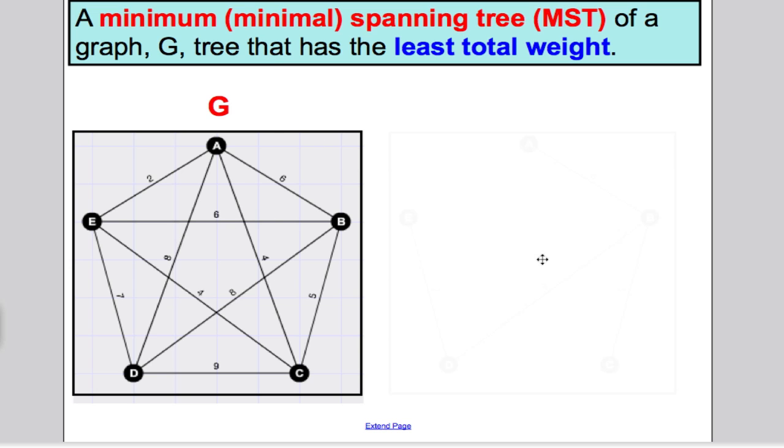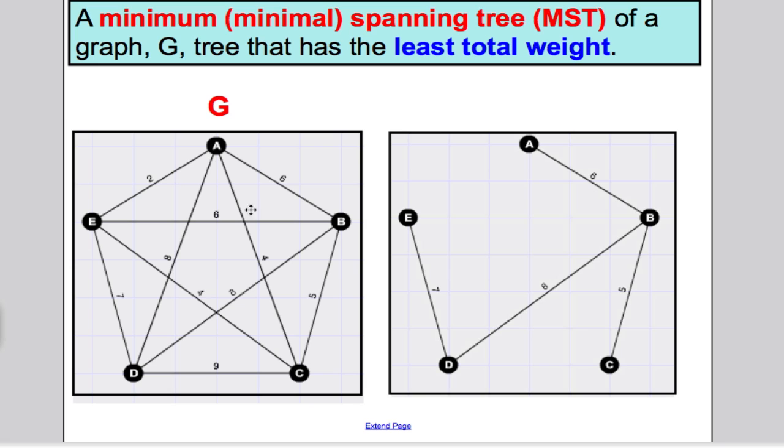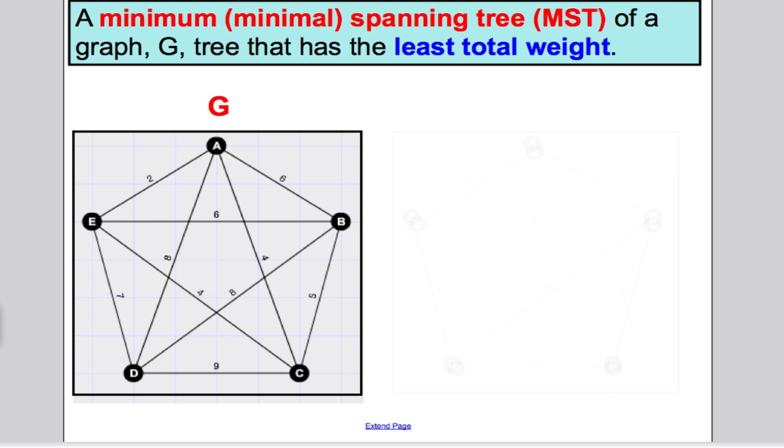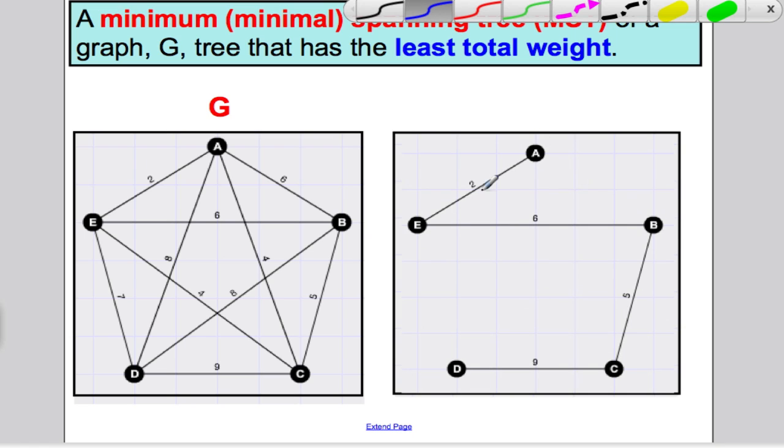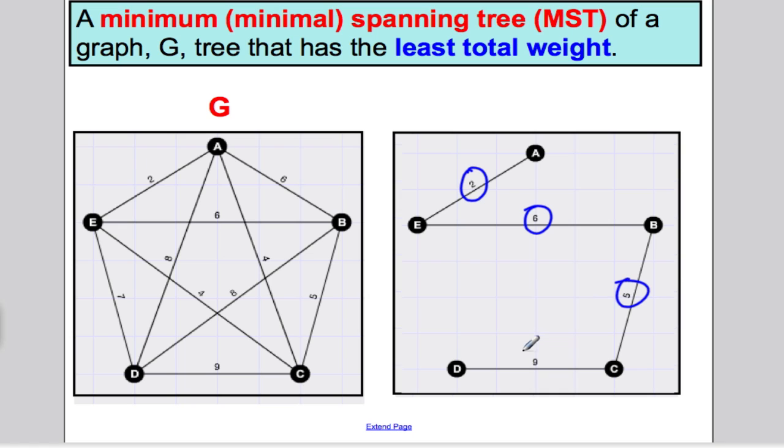Here's our original graph. That's certainly a spanning tree. If you add up the weights, 6 and 5 is 11, add 8 is 19, add 7 is 26. Is that least? Can we do better? Here's another spanning tree. This is 2 and 8, 2 and 6 is 8, add 5 is 13, add 9 is 22, so that's better than before.